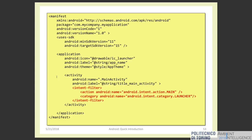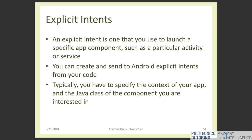This is an example of a simple manifest file with an application that has only one component — an activity — and an intent filter used to specify that this activity is the main activity, the one that will be opened when the user taps the application icon. Finally, an explicit intent is one you use to launch a specific app component such as a particular activity or service. You can create and send explicit intents from your code — typically you have to specify the context of your app and the Java class of the component you are interested in.